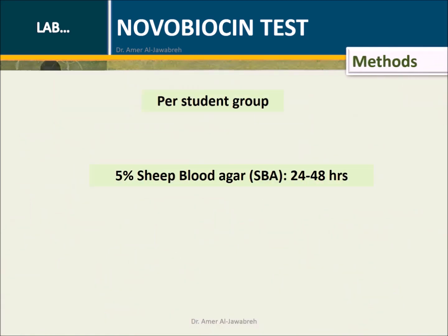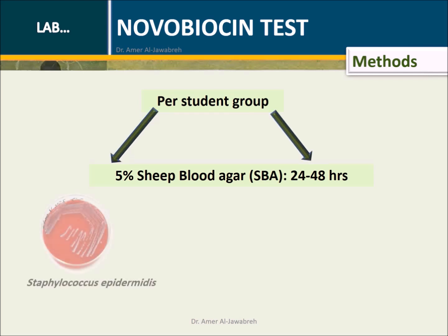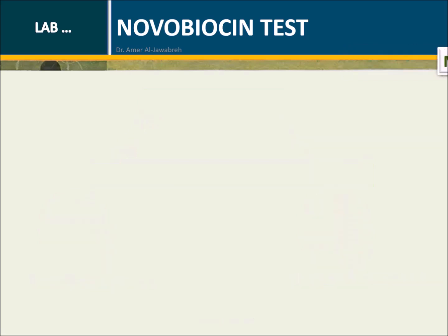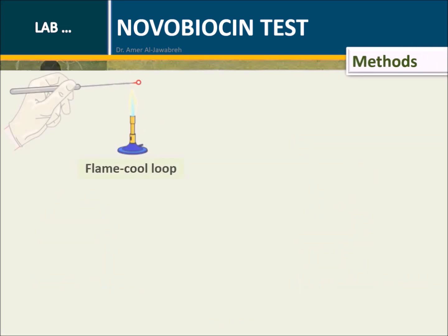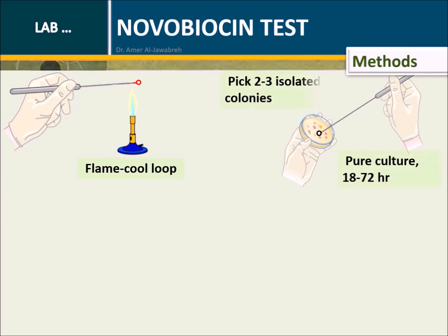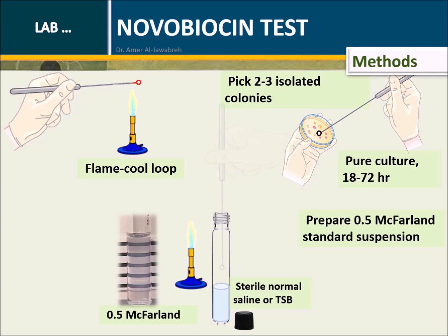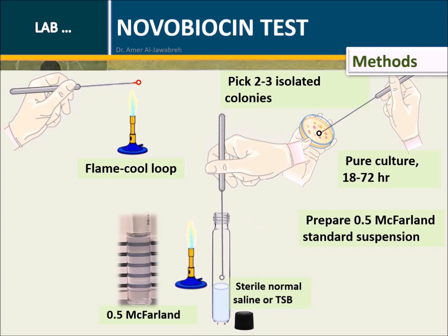Methods: Provide each student group with two sheep blood agar plates — one with S. epidermidis and the other with S. saprophyticus. From a pure culture, pick two to three isolated colonies and prepare a 0.5 McFarland standard suspension in sterile normal saline or trypticase soy broth (TSB).